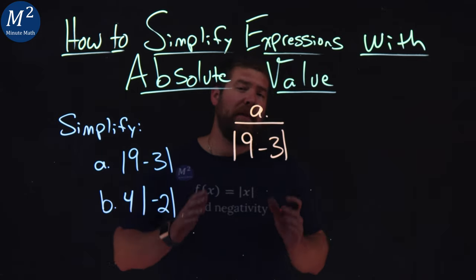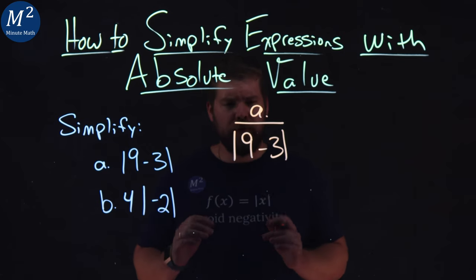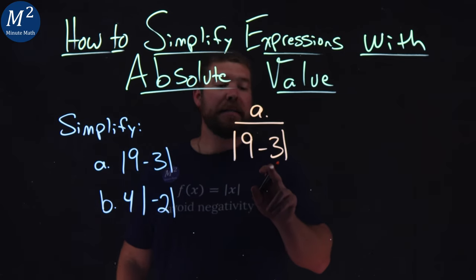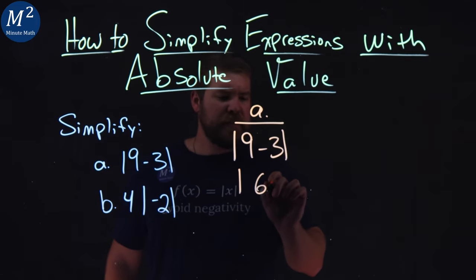Order of operations state we have to do what's inside the absolute value first. It's like a parenthesis. 9 minus 3, well, 9 minus 3 is 6, so we have absolute value of 6 here.